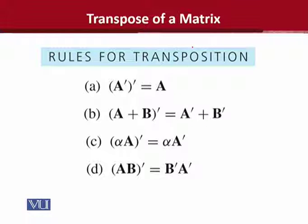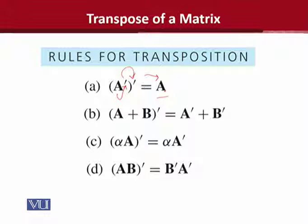Now we will set some rules to summarize transposition. The first rule is that if we take a transpose and then take the transpose again, the answer will be the original matrix. So twice a transpose is equal to the original — like putting something aside and then putting it back in its original place. This is an interesting property you can rehearse with any matrix.